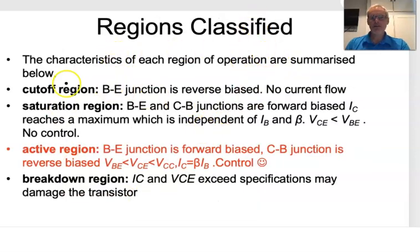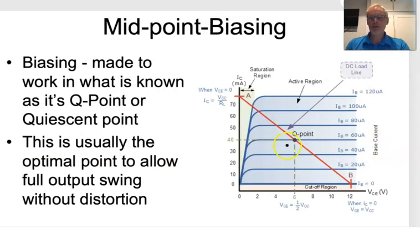So I've highlighted the characteristics of the cutoff region, saturation region, and the active region. This is the important region that we want to live in when we're designing amplifiers, and the way we can do this is by biasing the transistor. So we allow a little bit of current to flow into the base without audio being applied, and that will bias us into this Q point.